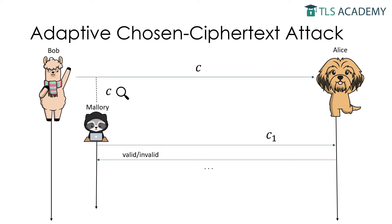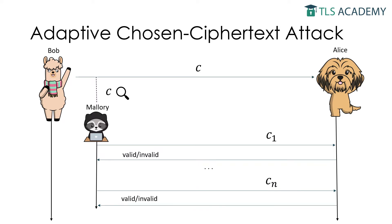Alice answers with whether the padding was valid or invalid. Note that Alice might not literally answer with that information. Instead, Alice might behave differently upon receiving a malformed message than when receiving a correctly formatted message. Mallory is therefore able to identify whether the padding in the modified ciphertext is valid or invalid, and thereby learns something about the plaintext of the message.